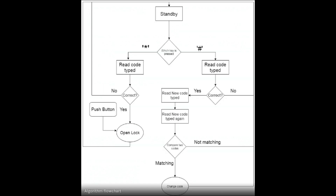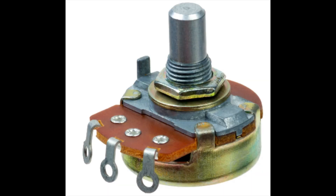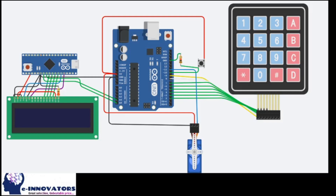For this video we'll be using Tinkercad. We have also made a video before on Tinkercad — to find that you guys can click on the link in the description below or on the top right corner eye button. The first project we are going to make is a keypad security lock with changeable codes. We'll first discuss how to interface the keypad with Arduino, then how to interact with servo and why we use EEPROM, and at last how to make this project on Tinkercad.